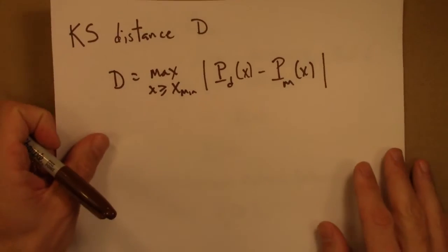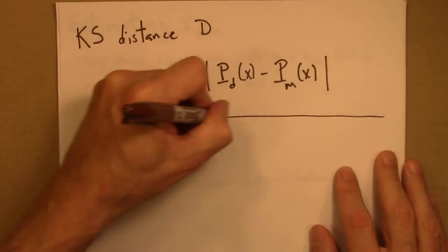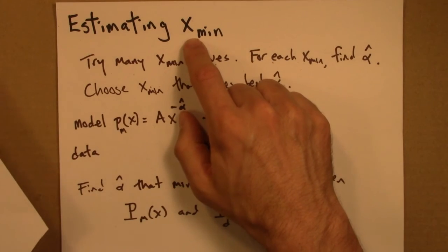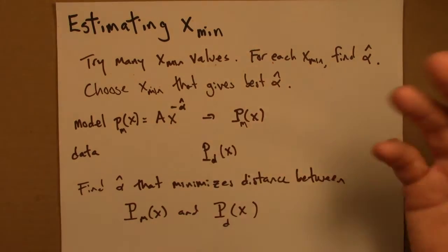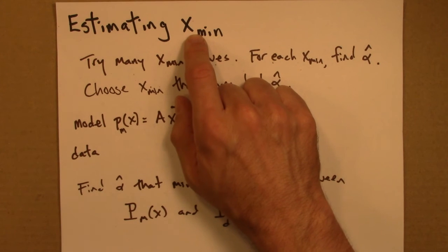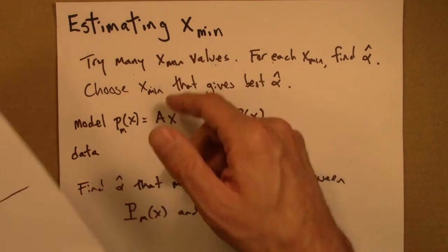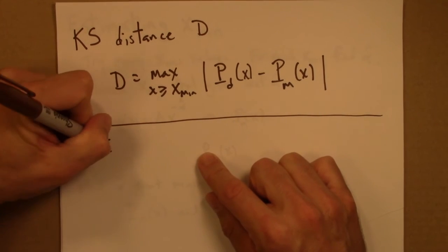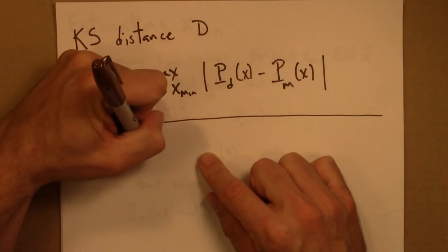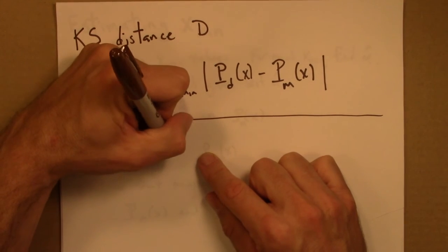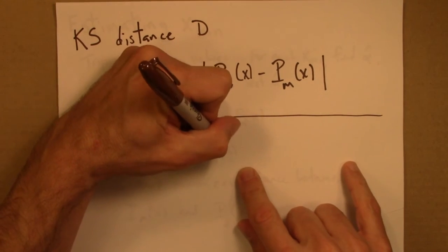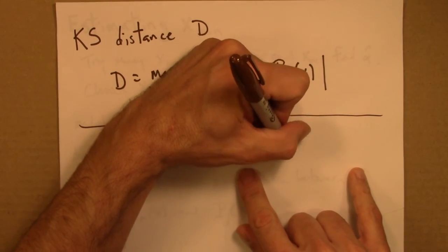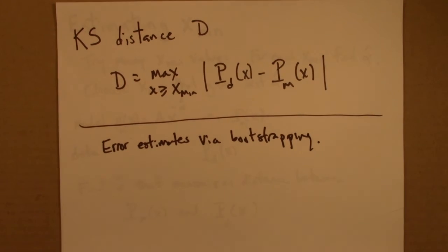And the last thing I want to mention is what if you wanted some error estimates on xmin. So this just gives a point estimate. It tells us how to figure out what xmin is. What if we wanted to come up with an error estimate?